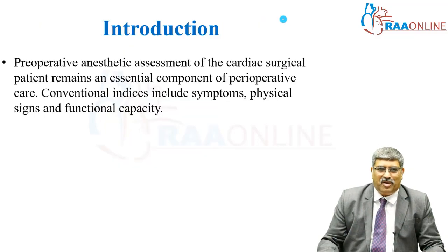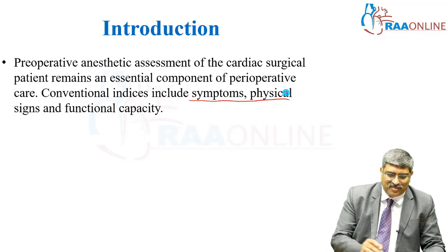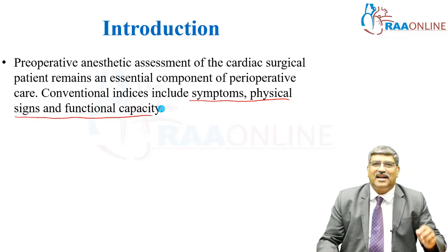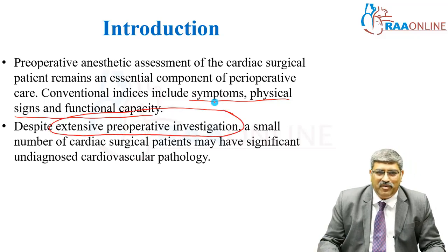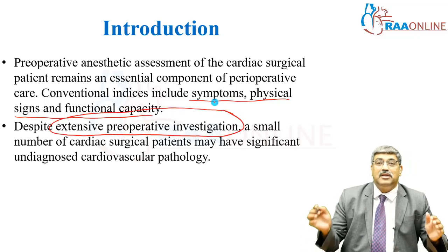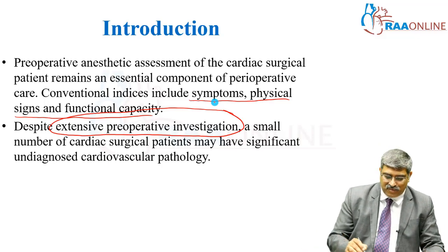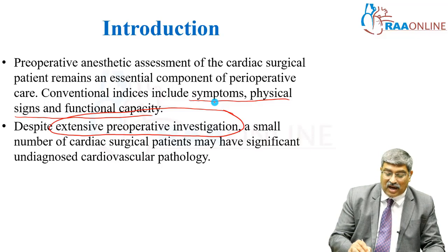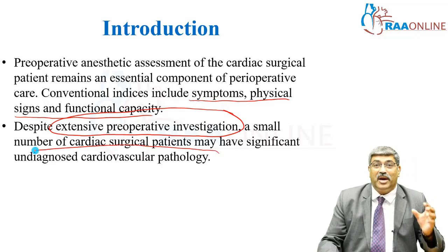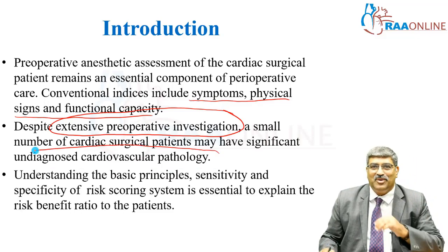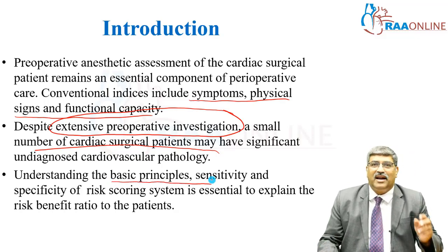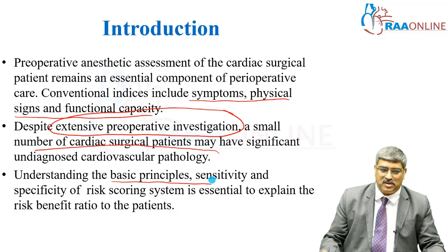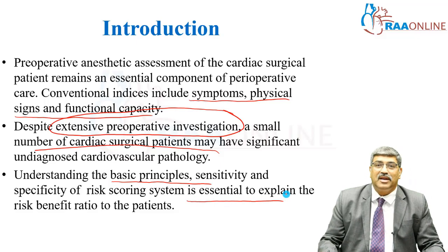Whenever you go for a pre-op assessment you see the patient's symptoms, physical signs, and assess the functional capacity. Then you go for extensive pre-operative investigations. In spite of extensive investigation, there may be some undiagnosed cardiovascular pathology which might affect the outcome. That is where your risk scoring system comes into picture. Understanding the basic principle, sensitivity, and specificity of each scoring system is very essential to explain the risk-benefit ratio to the patient.